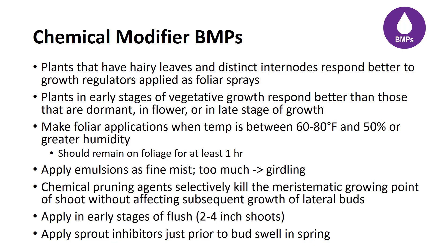Emulsions should be applied as a fine mist uniformly over the entire plant. Excessive applications must be avoided since large accumulations of the emulsions can girdle stems of tender plants. The best response on woody species has been when the chemical was applied as a fine mist when the plants were in the early stages of a flush of growth and the new shoots were 2 to 4 inches in length.